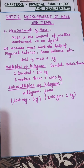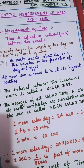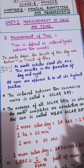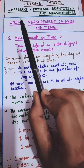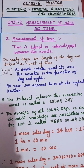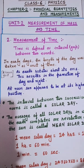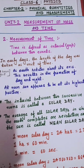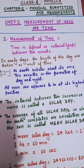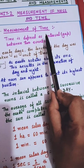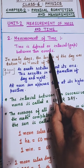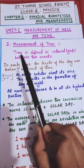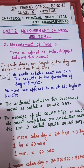The second topic of this unit is measurement of time. What do you mean by time? Whatever things we do, there is a time interval between the two works which we have done. Time is defined as the interval between two events — the gap between any two works we perform is called time.